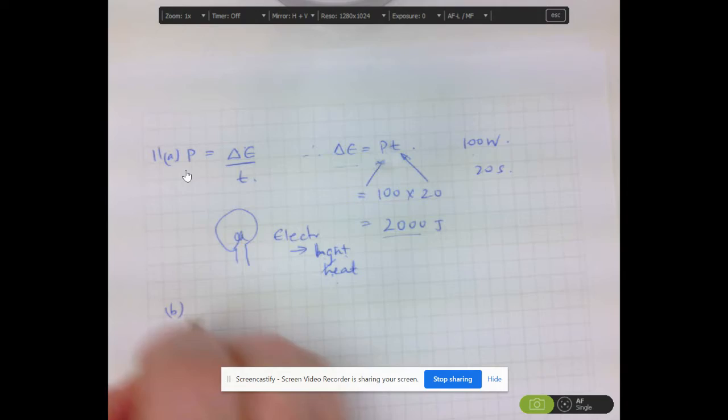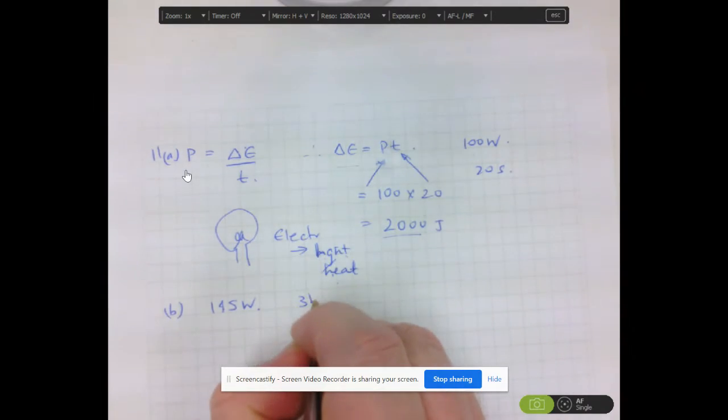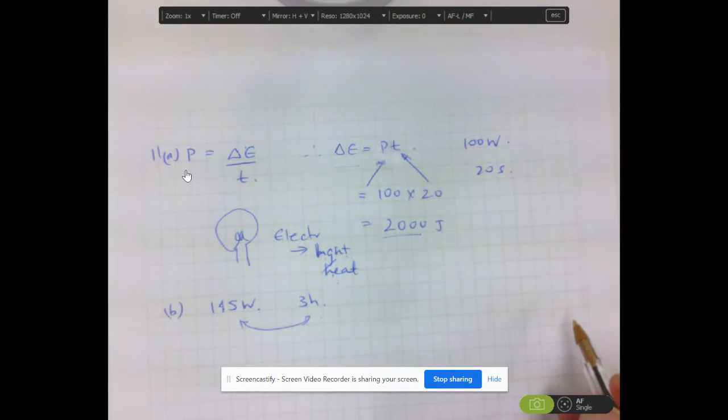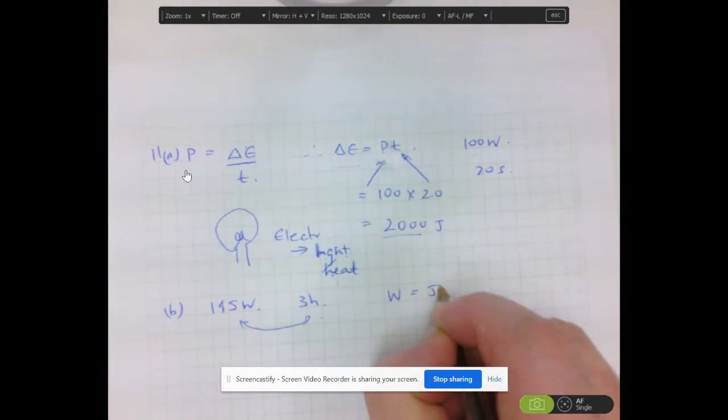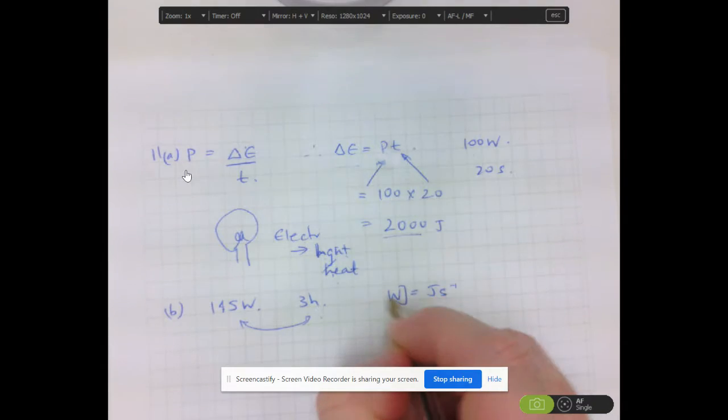Let's go on to B now. A TV has a power rating of 145 watts, and it's watched for three hours. The only problem that we have here is that the time measurement is in hours rather than in seconds, because don't forget that watts is joules per second.